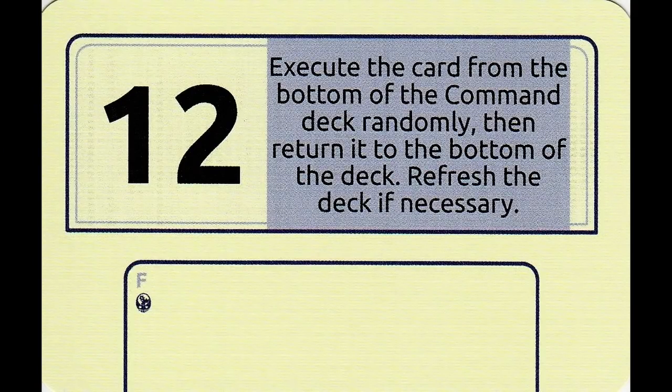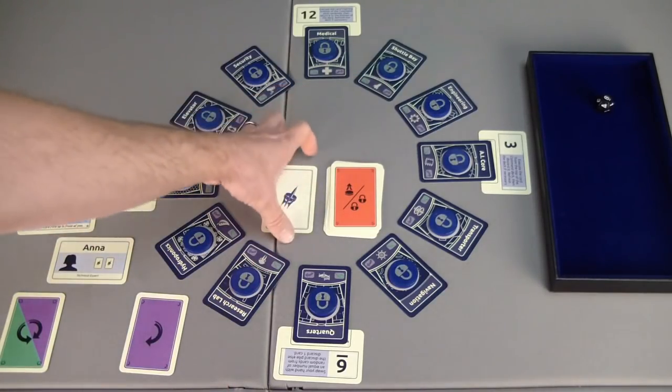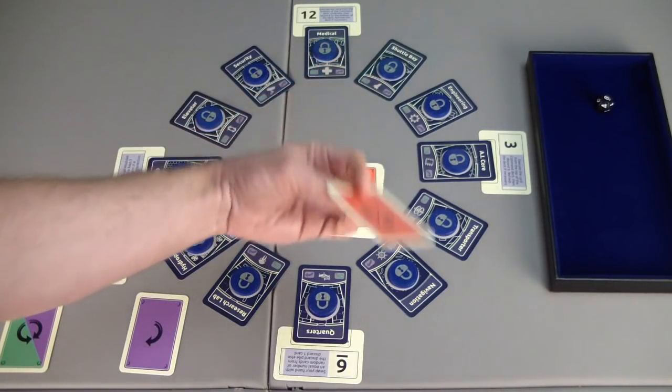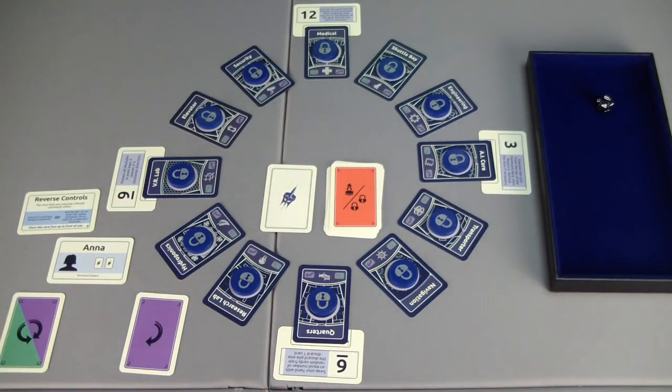We don't have to worry about the malfunction. Because once all 12 are locked, the game immediately ends when you win by correctly locking all room modules before the time runs out. And it looks like we had one card left, which was the deploy lock card, as I thought. Card 12 states, execute the card from the bottom of the command deck randomly. Then return it to the bottom of the deck. Refresh the deck if necessary. Since everything's locked, executing this would not have done anything anyway. And it would have got returned right to where it was at.